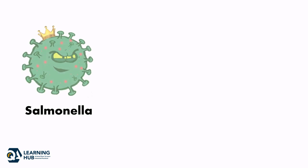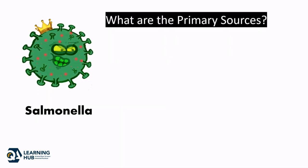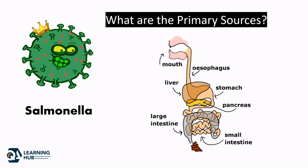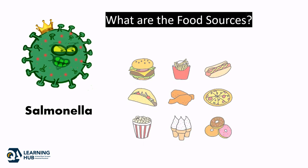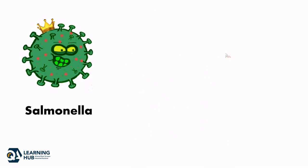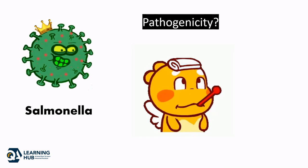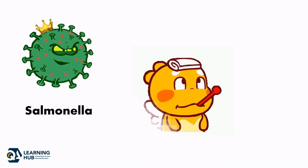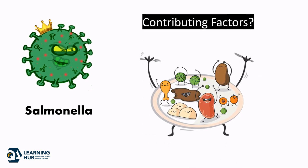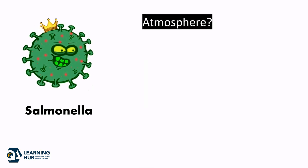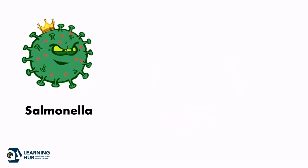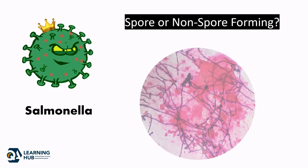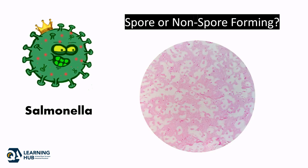If you have already watched that video, can you now be able to answer: What are the primary sources of Salmonella? On what type of food does Salmonella like to grow? What diseases are caused by Salmonella toxicity? What are the contributing factors which enable Salmonella to grow in food? What atmosphere is required for Salmonella to grow, either in presence or absence of oxygen? Is Salmonella a spore-forming or non-spore-forming bacteria?